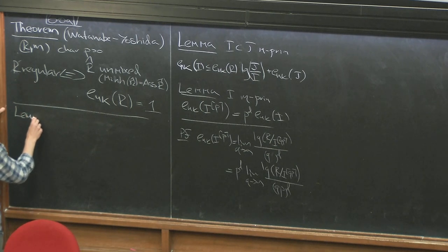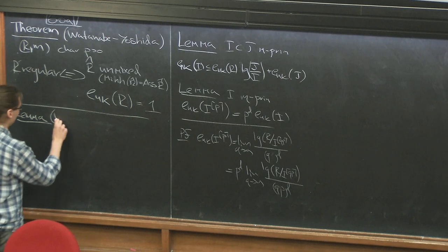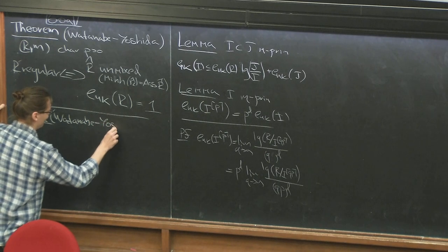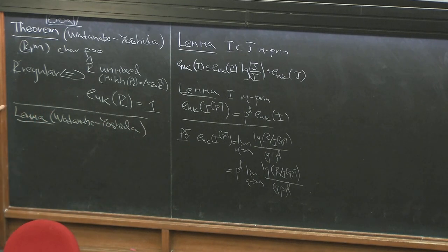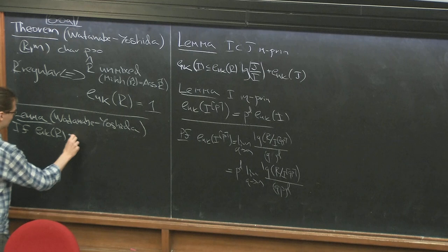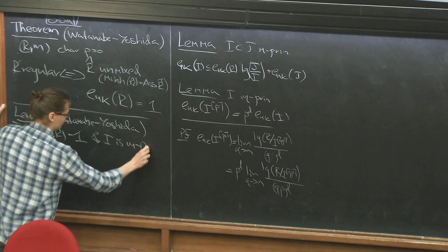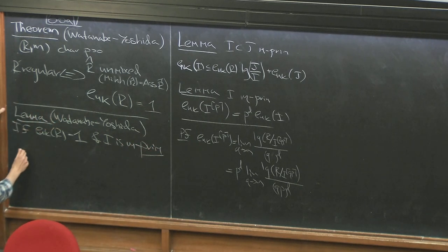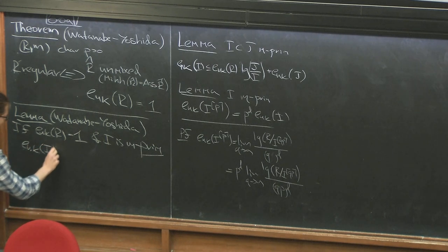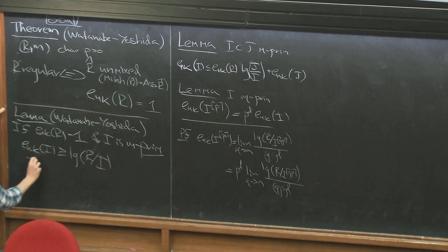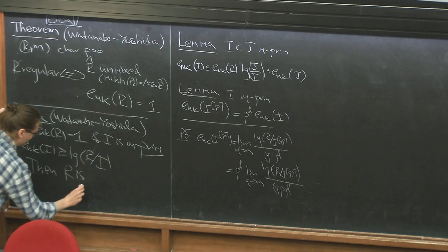The key tool for the theorem of Watanabe-Yoshida is, not surprisingly, a lemma of Watanabe-Yoshida. If Hilbert-Kunz multiplicity of r is equal to 1, and i is an m-primary ideal such that its Hilbert-Kunz multiplicity is greater than or equal to its colength, and i lies inside m bracket p, then r is regular.